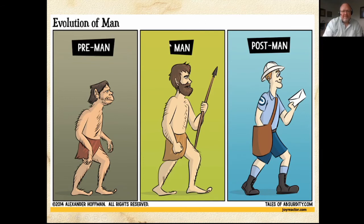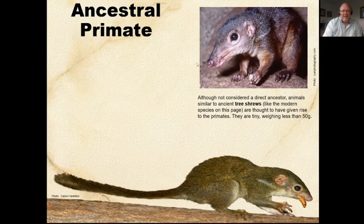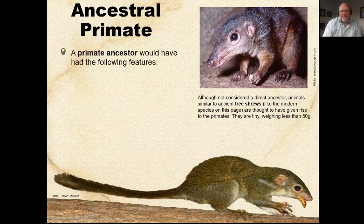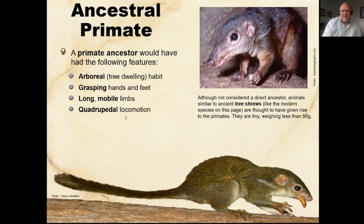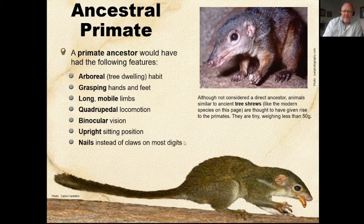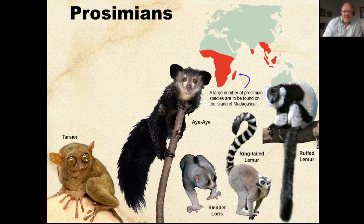During the time of dinosaurs, something very similar to this tree shrew used to live, and this eventually developed into the prosimians. It was tree-dwelling, grasping with hands and feet, with long mobile limbs, quadrupedal locomotion, and binocular vision. You can see the eyes are not yet all the way forward, the feet are not fully prehensile but can grasp, and they have nails instead of claws.